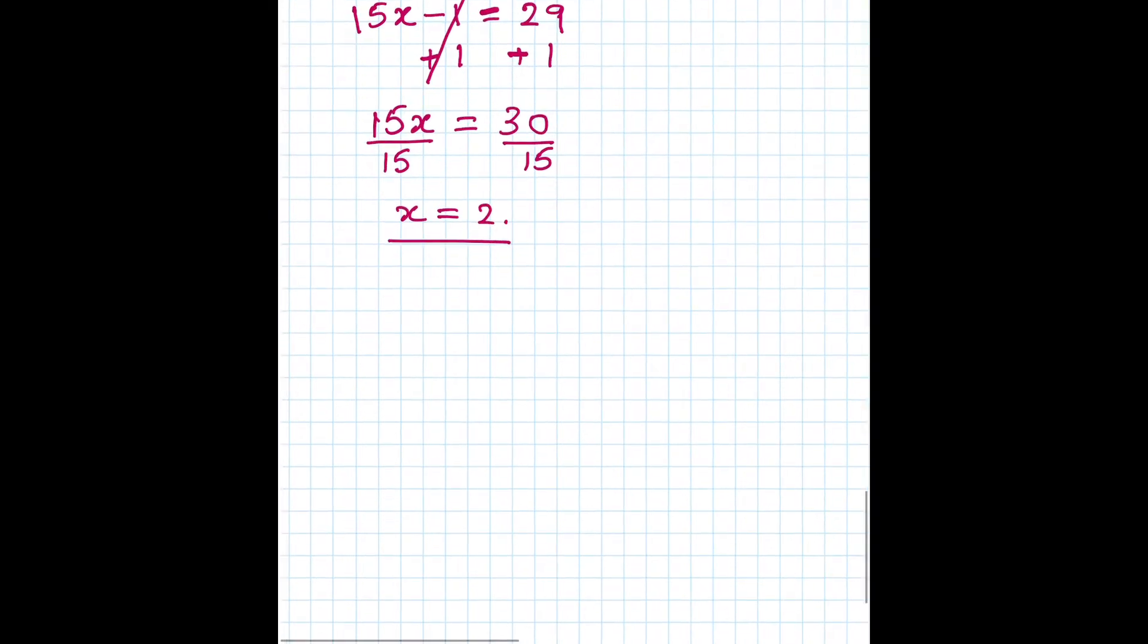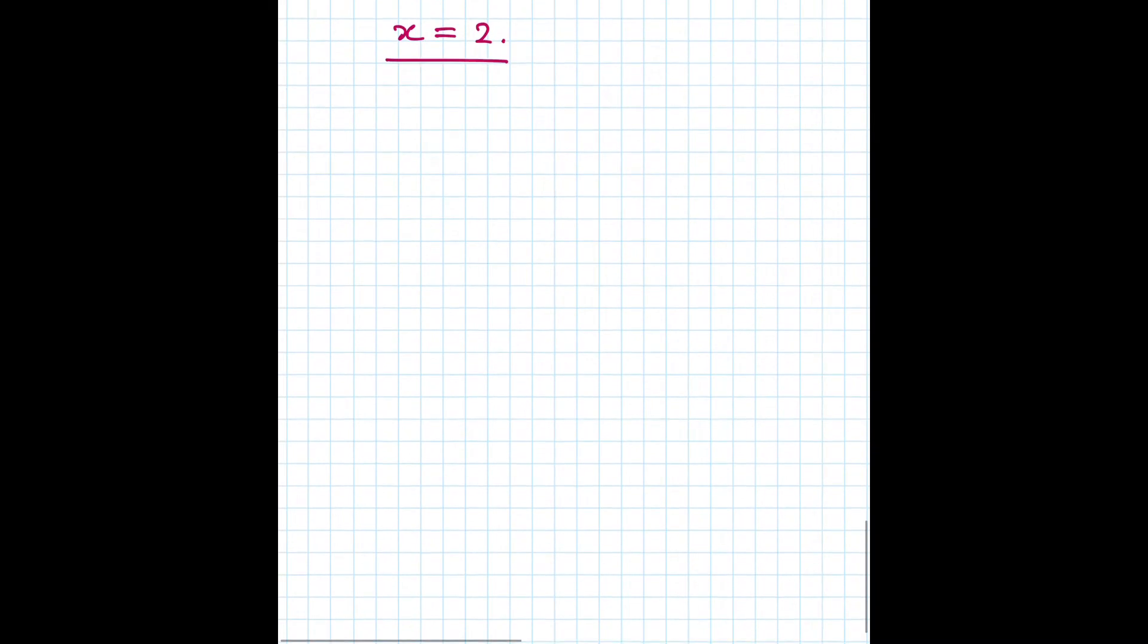Let us suppose we have another question and this question is 2 bracket 3y minus 5 minus 3 equals 42.2. Decimals, let's make it fun. So again open the bracket first. 2 times 3 is 6, so we have 6y minus 2 times 5 is 10.